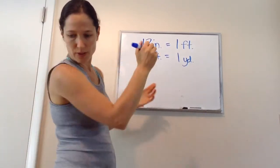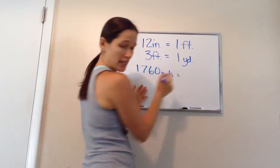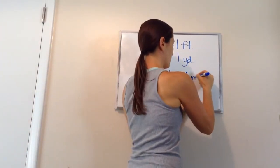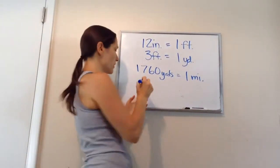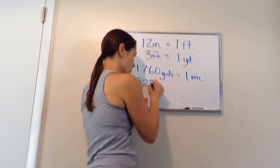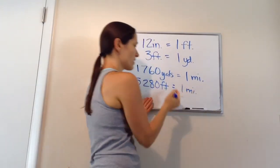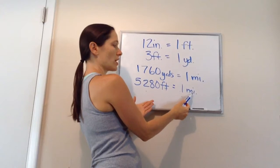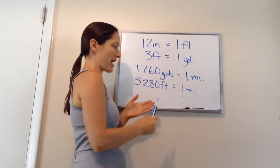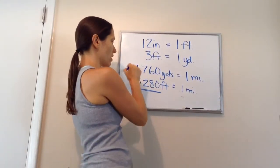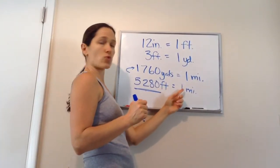Now, what about this one? 1,760 yards equals 1 mile. 1,760 yards equals 1 mile. And last one, 5,280 feet equals 1 mile. So, this one, 1 mile equals that many in yards. This one mile equals this many in feet. I would say, just from doing math all these years, this one you'll see way more than this one. So, this one I would definitely memorize. 5,280 feet equals 1 mile.